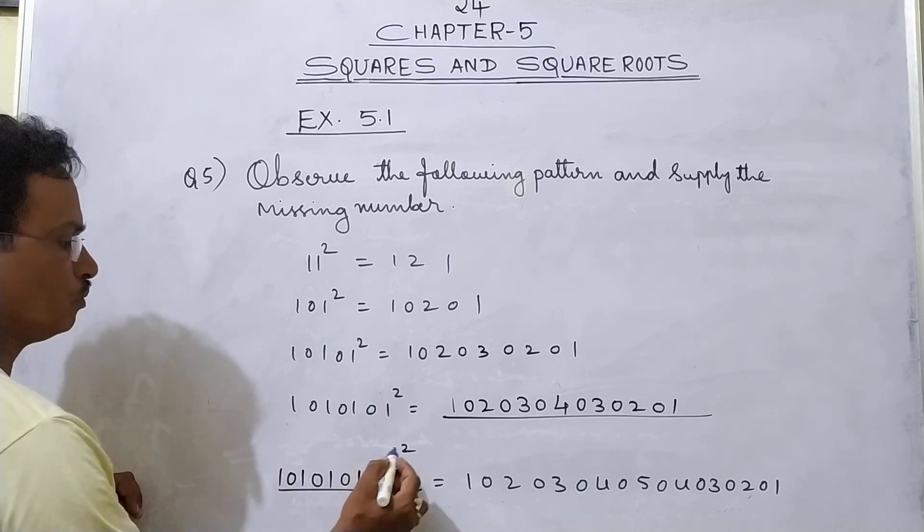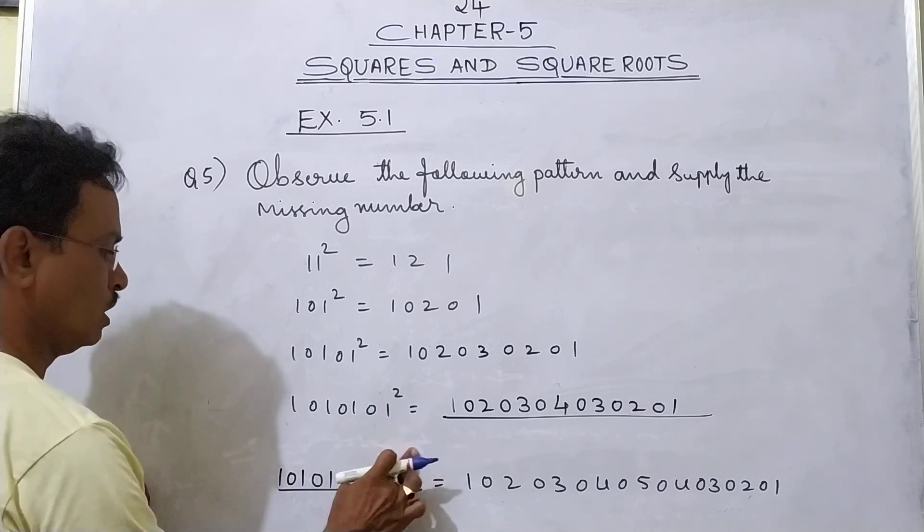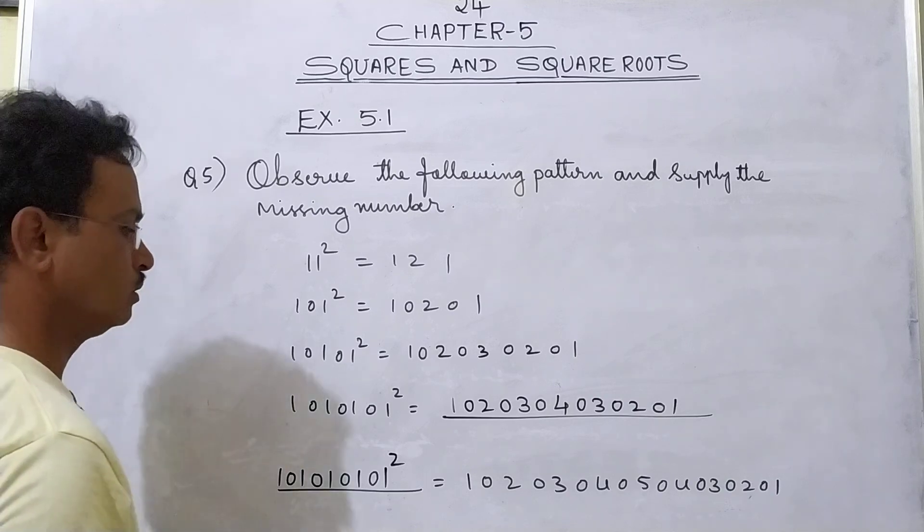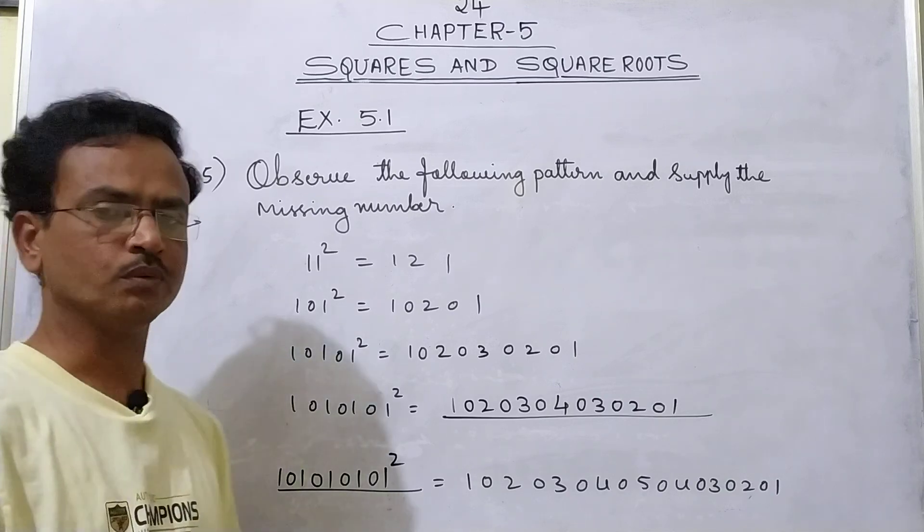Okay. These two you write here as square. Understood?